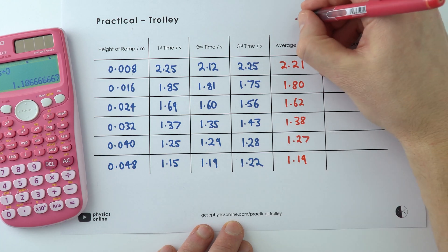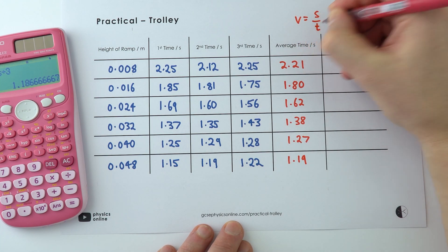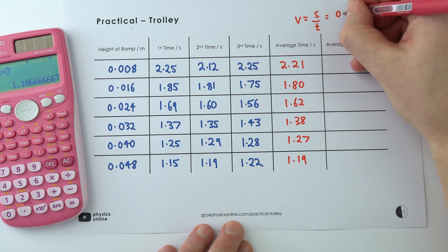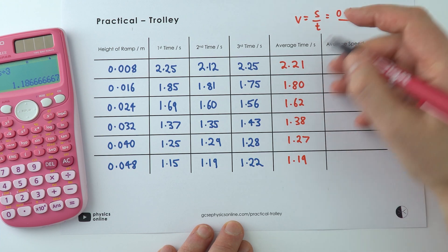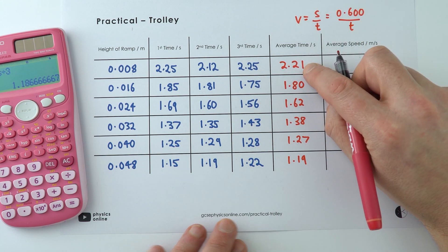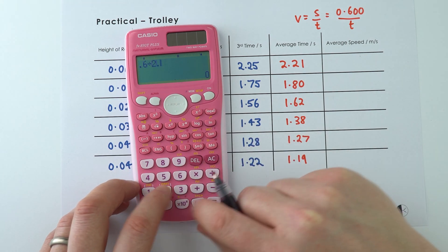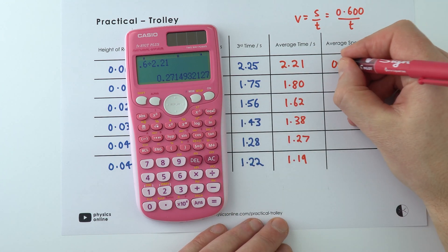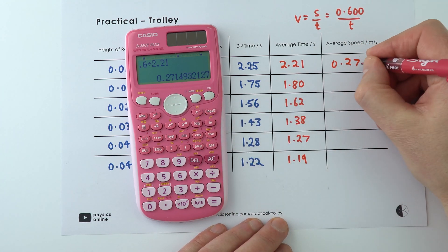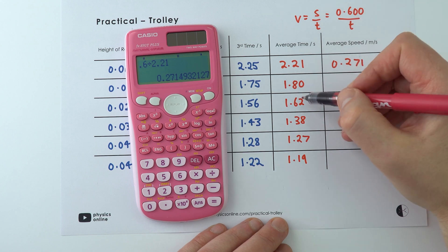Now I'm going to be using the equation that says the speed is equal to distance divided by the time. The distance each time was equal to 0.600 meters and then the time is whatever time we have in this column over here. For the first one it's just going to be equal to 0.6 divided by 2.21 which gives me a value of 0.271 meters per second. I'm going to give all of my data here to three significant figures like my distance here and my time.